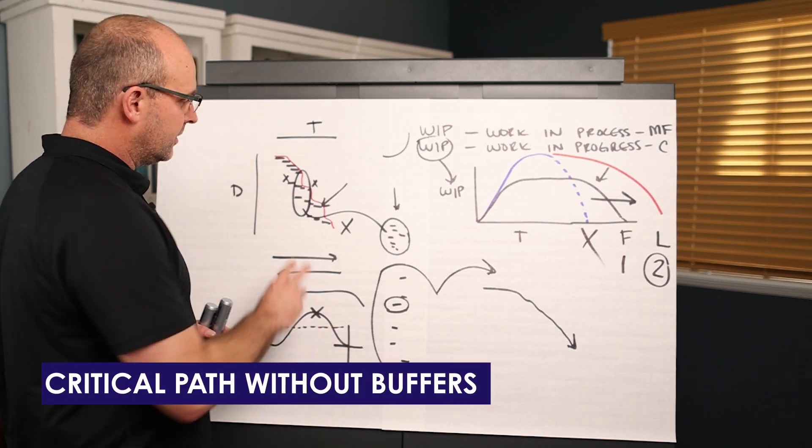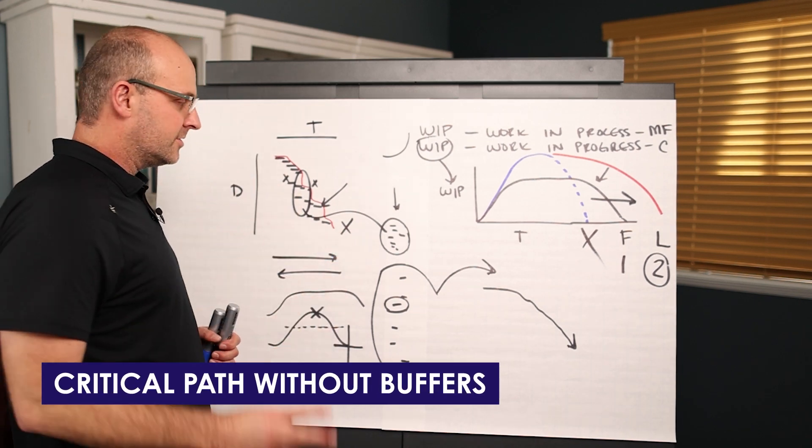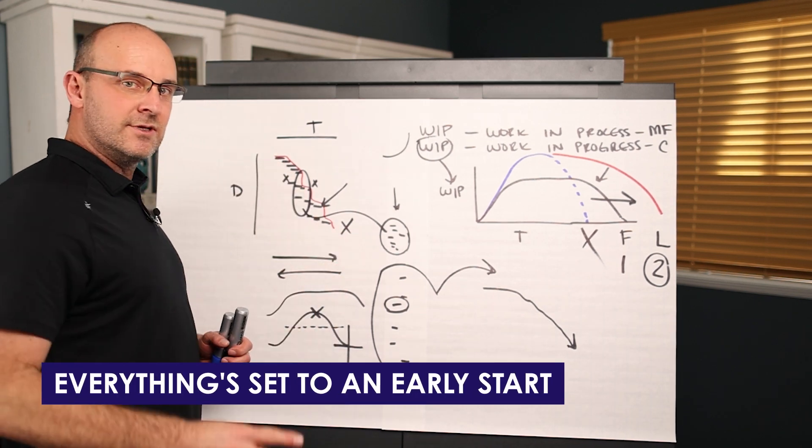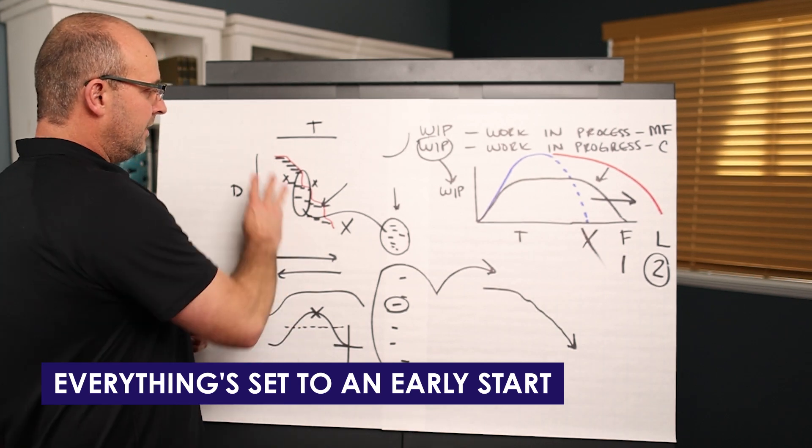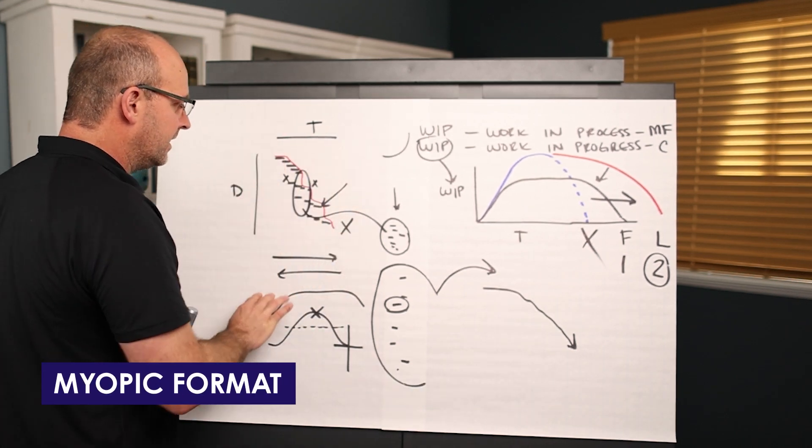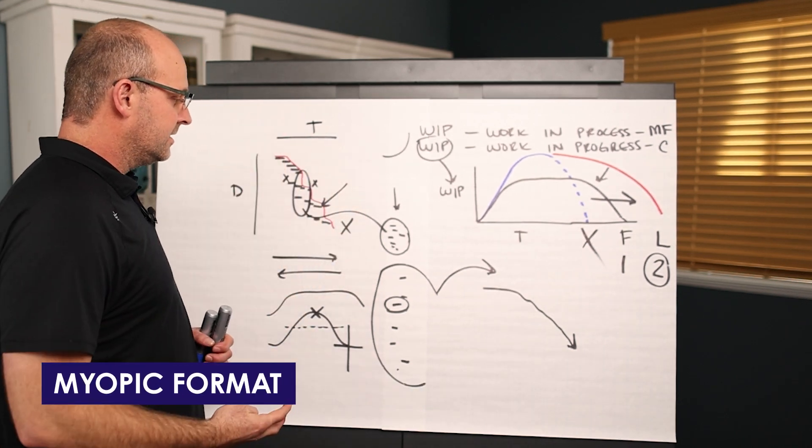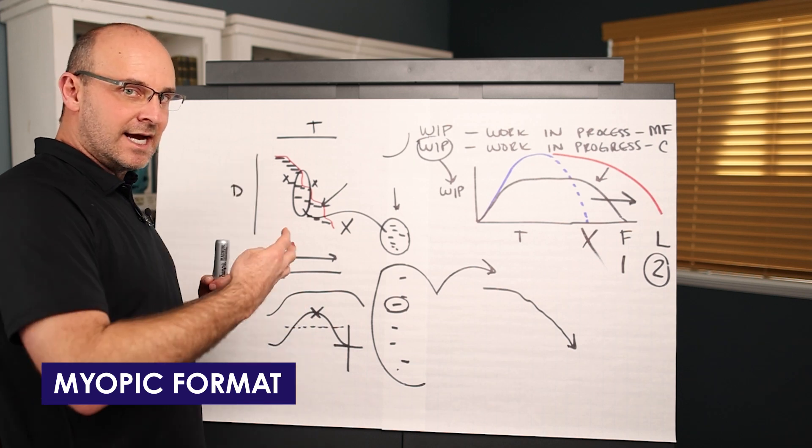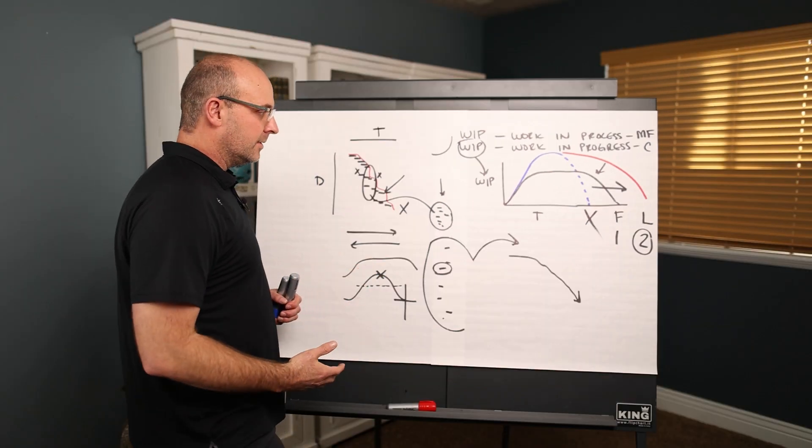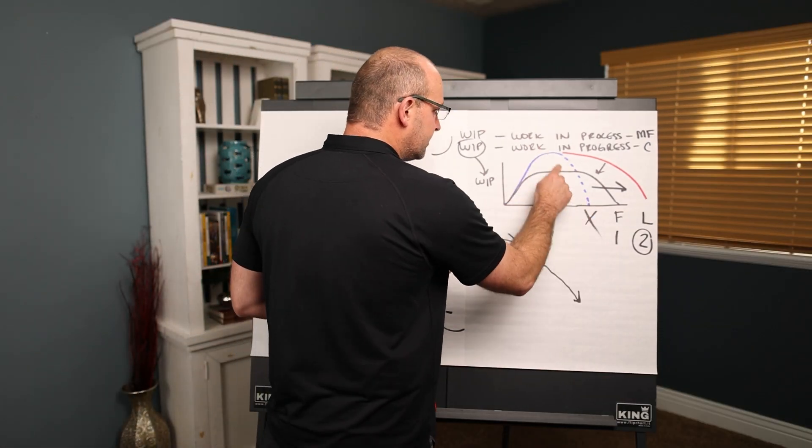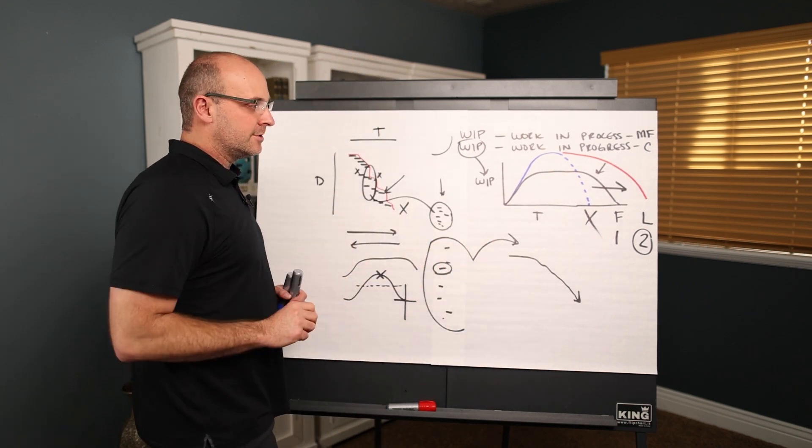Because you have a critical path without buffers, it increases WIP. Because everything's set to an early start, it increases WIP. Because it's in a myopic format with large batch areas that aren't properly zoned, it's pushing and stacking people. And so it increases WIP. It is designed to do this in the effort to rush and push and panic.